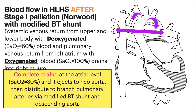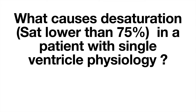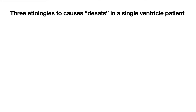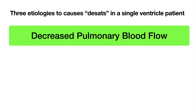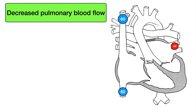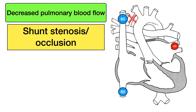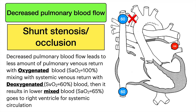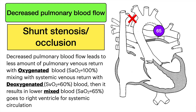What causes desaturation (sat lower than 75%) in a patient with single ventricle physiology? There are three etiologies: decreased pulmonary blood flow, pulmonary venous desaturation, and systemic venous desaturation. Decreased pulmonary blood flow — such as from shunt stenosis or occlusion — leads to less oxygenated pulmonary venous return (sat 100%) mixing with deoxygenated systemic venous return (sat 60%), resulting in a lower mixed sat of 65% going to the ventricle for systemic circulation.